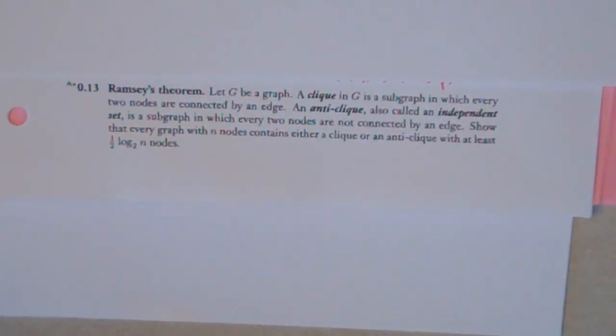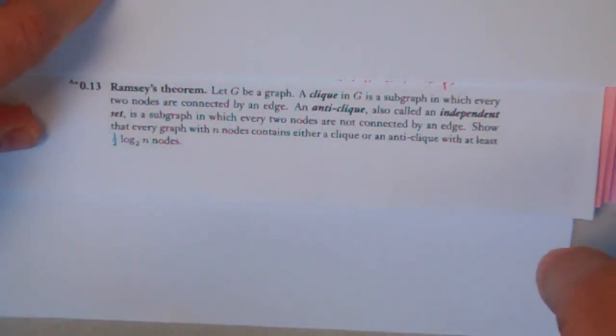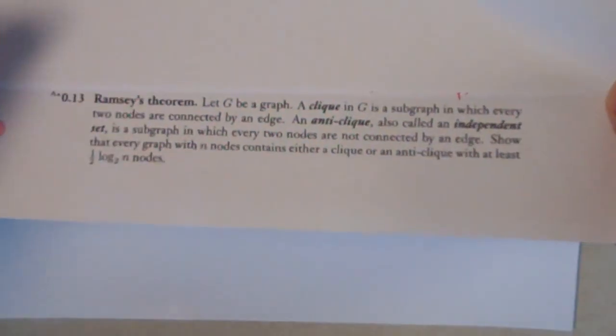This is the problem where it says if G is a graph, there's going to be a clique in G or an anti-clique in G, where at least either the anti-clique or the clique is going to have at least 1/2 log_2 n nodes. That's the Sipser question. So let's see if we can figure this out.